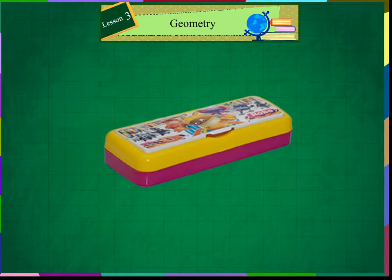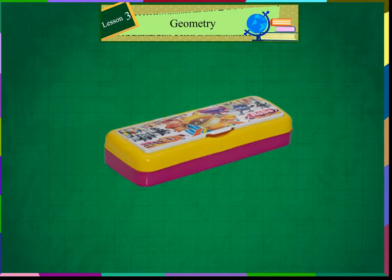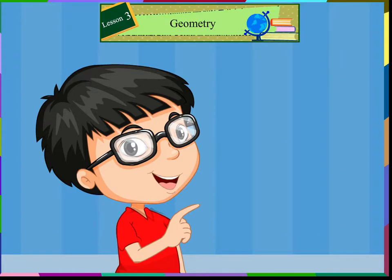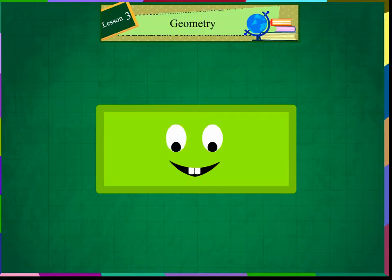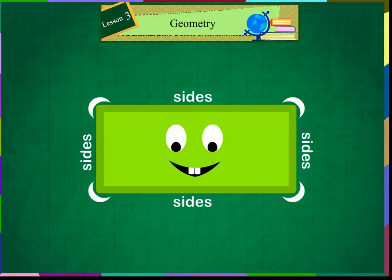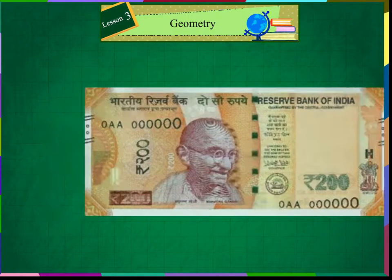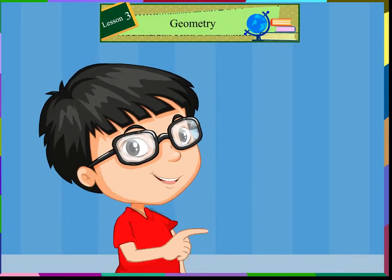Rectangle. Look at this pencil box. Oh, this is my pencil box. What shape is this? It is a rectangle. Yes, this is rectangle in shape. A rectangle has four corners or vertices and four sides. Its opposite sides are equal. It has one face. Some examples of rectangles are a book, TV, ruler, and the rupee notes. Rectangles can also be in various sizes as shown on the screen.